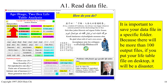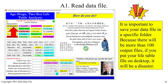First of all, you should click on the A1 Read Data File button. It is important to save your data file in a specific folder, because there will be more than 100 output files. If you put your life table file on the desktop, it will be a disaster.